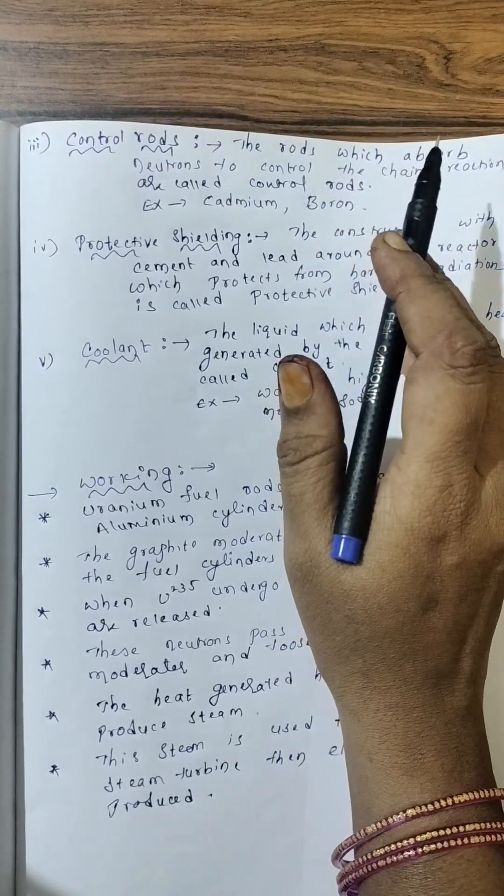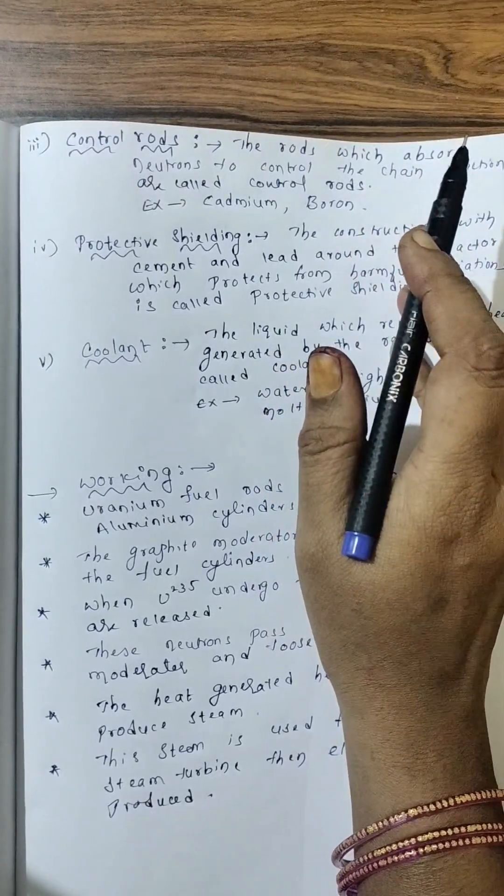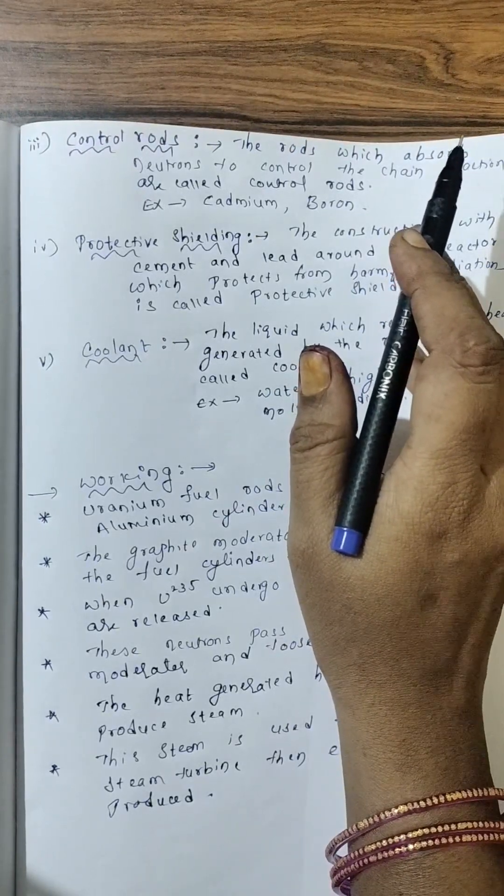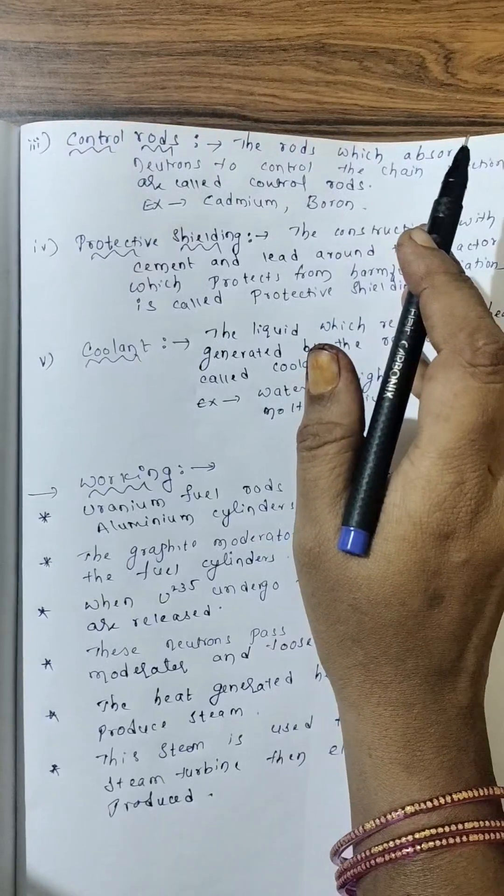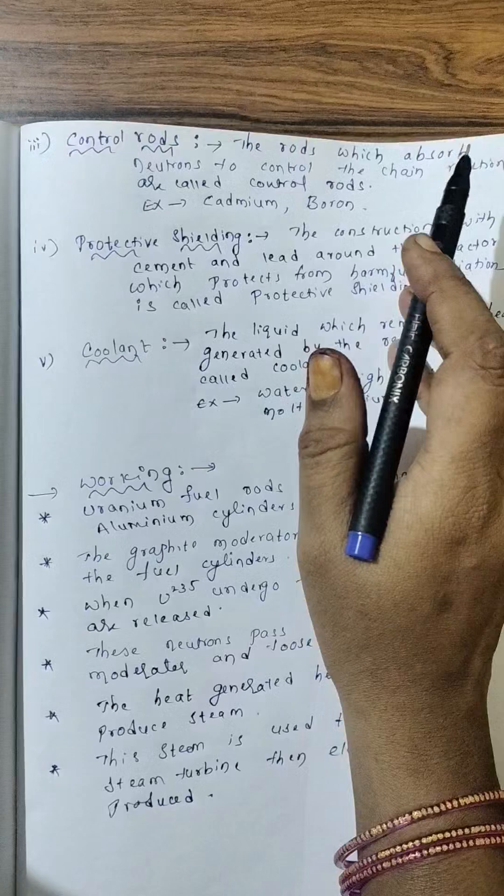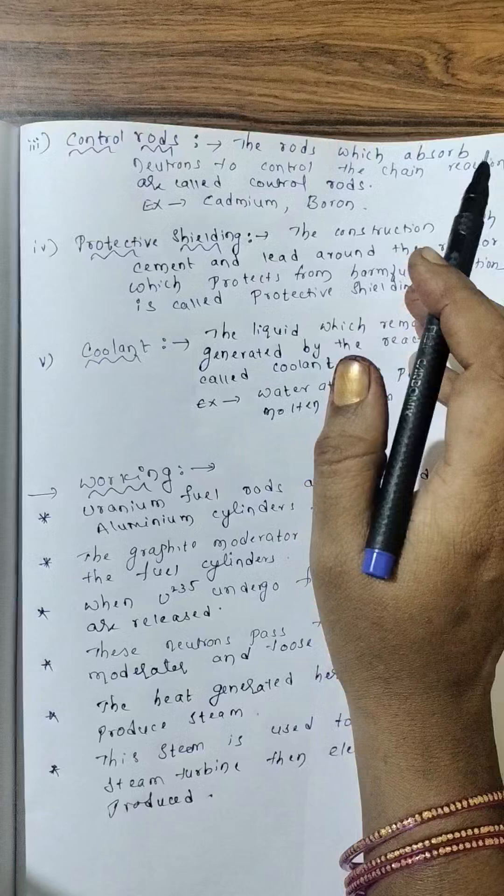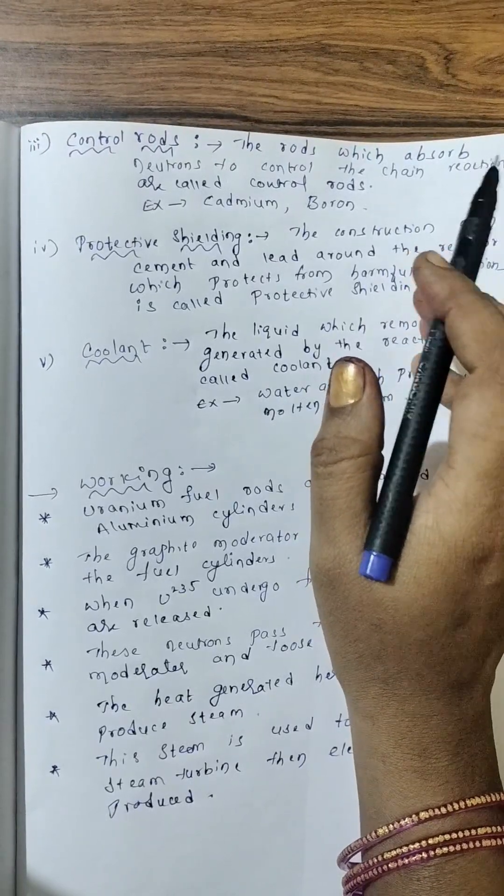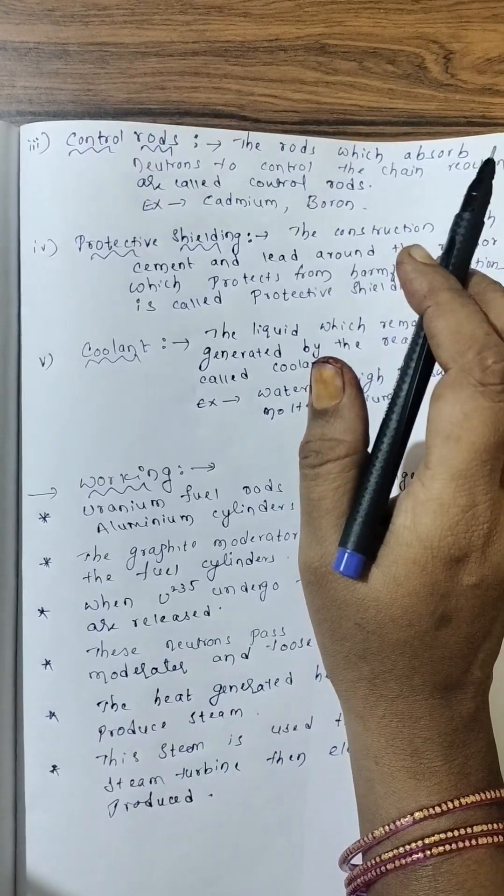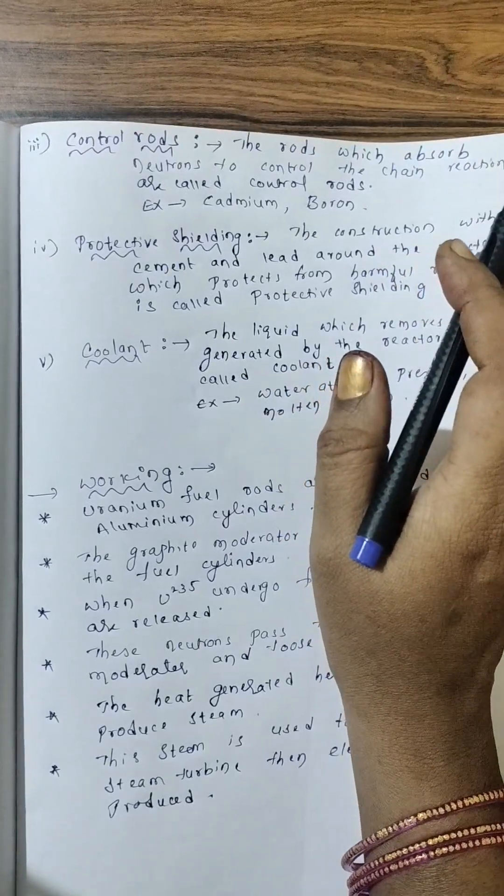That three neutrons will go and collide with three uranium atoms. So it multiplies. So nine neutrons will be released. That nine neutrons will go and collide or bombard with nine uranium atoms. So 27 neutrons are released. So in such a way, multiple neutrons, a chain reaction is produced. So this uncontrolled chain reaction creates many disadvantages.